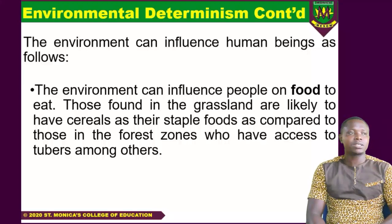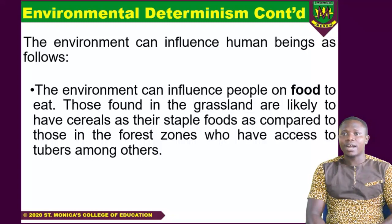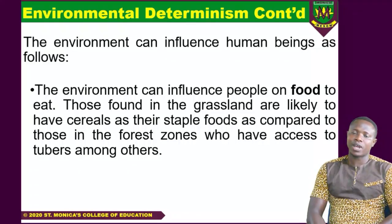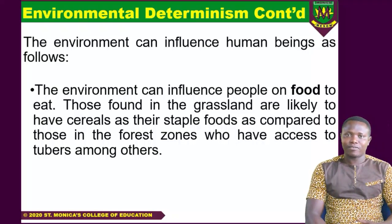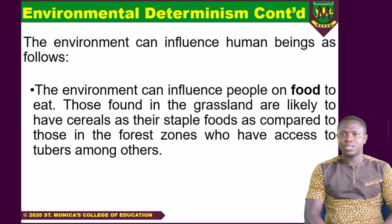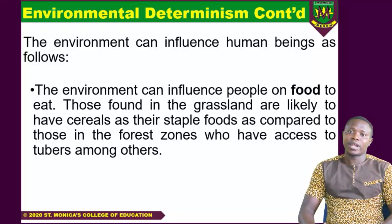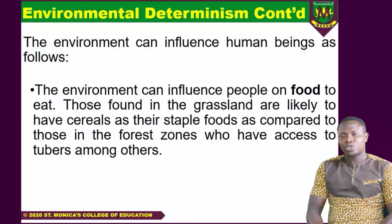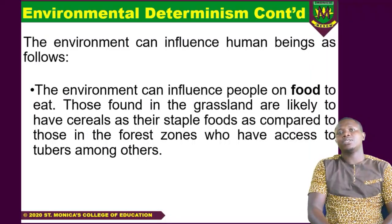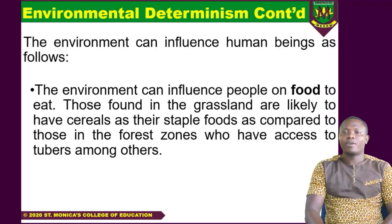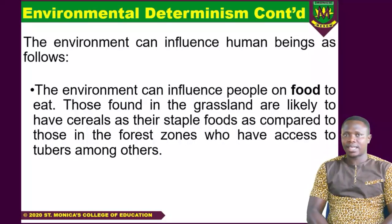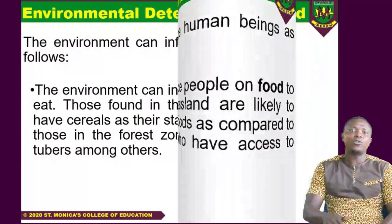One, the environment can influence the food that you eat. Those found in the grassland zones are likely to have cereals as their staple foods, compared to those in the forest zones who have access to tubers. For example, in Ghana, those in the northern zones mostly eat cereals — millet, maize, among several others — while those in the southern portions, being in the forest zone, normally consume tubers such as yam and cassava. So they believe that your environment can influence the kind of food that you eat.